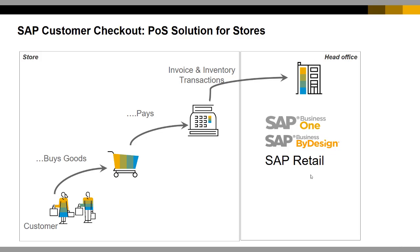SAP Customer Checkout supports the checkout process in a physical store. A customer walks into a physical store, buys all the different goods, then goes to the POS terminal where the cashier is, pays for these goods, and leaves the store. This transaction created in the POS terminal is then posted to the according SAP ERP system. We support integration to SAP Business One, SAP Business ByDesign, and SAP Retail.